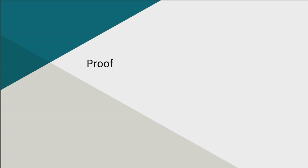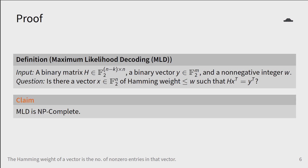Recall that our goal was to prove that the maximum likelihood problem MLD is NP-complete. Let's first formally define the maximum likelihood problem. We're given a matrix H of size n minus k by n with entries from the field of size 2, that is, the matrix is binary. We also have a binary vector of size m and a non-negative integer w.